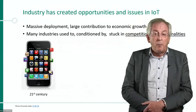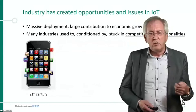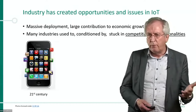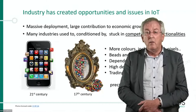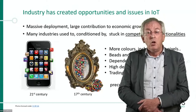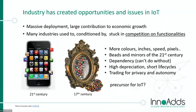In the 21st century we see massive deployment, large contribution to economic growth, and many industries focusing on competition by functionality — more colors, more functions, switching motors on or off remotely. I make a bold comparison with the 17th century: back then we used beads and mirrors to trade with people in Africa in return for valued goods. Basically the same is happening today — consumers trade privacy and some of their autonomy in return for functionalities, not only on their iPhone but also in IoT.